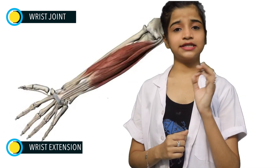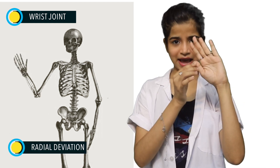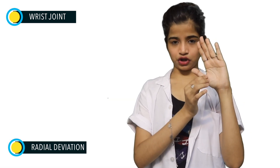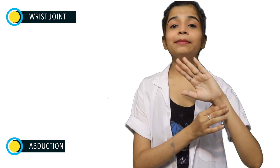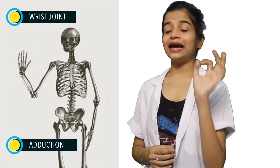Bending our wrist backward like this is called extension. Coming to another movement — when we deviate our wrist laterally, like when we wave bye to someone, this is called radial deviation or abduction. When we do it in the opposite way like this, it is called ulnar deviation or adduction.